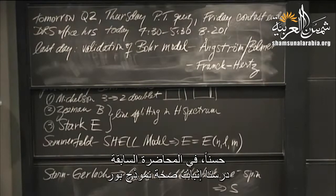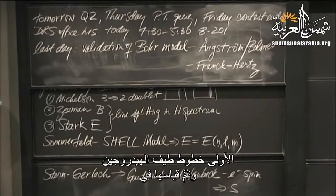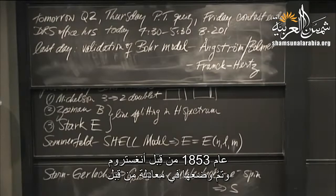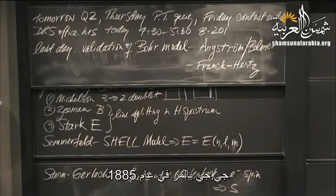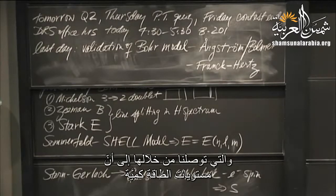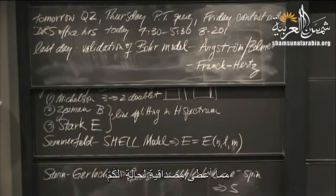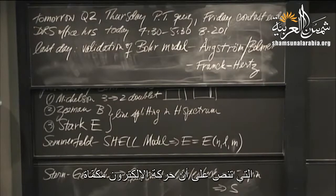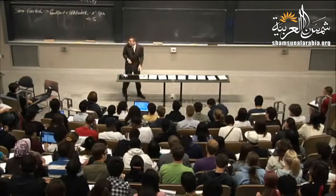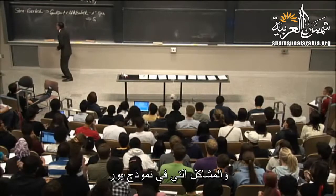Last day we looked at the validation of the Bohr model and we had two pieces of experimental data. First were the hydrogen spectrum lines measured in 1853 by Angstrom and fit to an equation by J.J. Balmer in 1885. Secondly, we saw the Franck-Hertz experiment, in which we were able to get the sense that energy levels within a multi-electron atom like mercury are also quantized, which gave credence to the quantum condition.